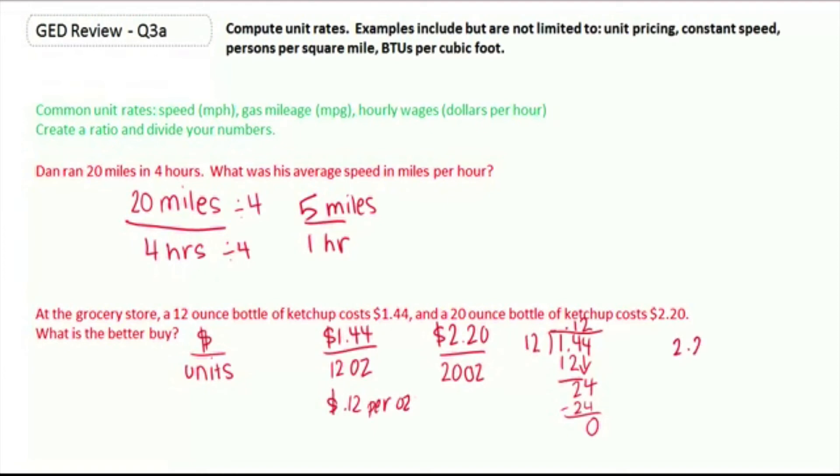For the other one, we're going to take our 2.20 and divide it by 20. 20 doesn't go into 2. 20 goes into 22 once, with 2 left over. Bring down our 0, and 20 goes into 20 once, with no remainder. So the 20-ounce bottle is 11 cents per ounce.